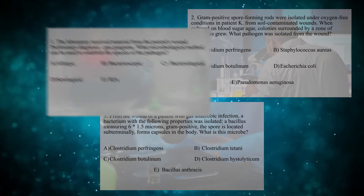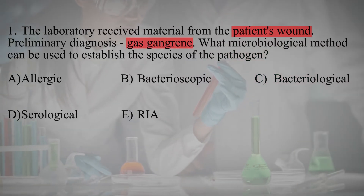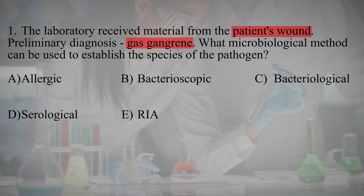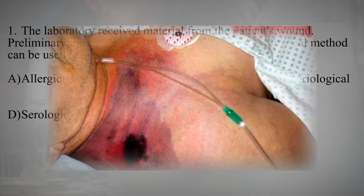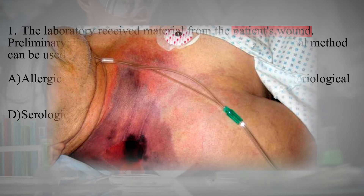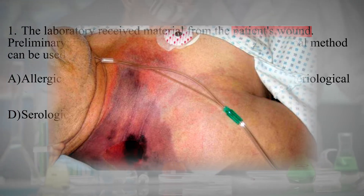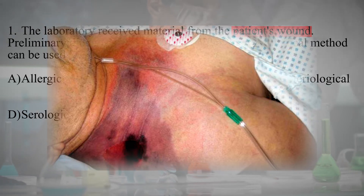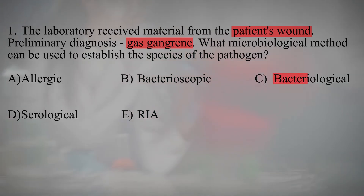The laboratory received material from a patient's wound with a preliminary diagnosis of gas gangrene. What microbiological method can be used to establish the species of the pathogen? Only bacteriological methods can identify the causative agent of gas gangrene by biochemical and hemolytic characteristics. Gas gangrene immunity involves toxin-neutralizing antibodies, but their protective activity is insufficient. Serological methods are not used, and bacterioscopic and allergic methods don't allow determining the type of pathogen. Therefore, the correct answer is bacteriological method.